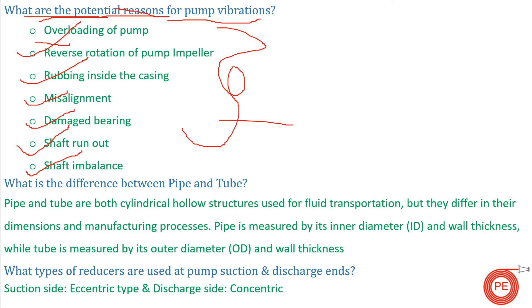What is the difference between pipe and tube? Pipe and tube both are cylindrical hollow structures which are used for fluid transportation, but they differ in dimensions and manufacturing processes. A pipe is measured by its inside diameter (ID) and wall thickness, generally given by your nominal bore, while a tube is measured by outer diameter (OD) and wall thickness. This is the basic difference between the two.